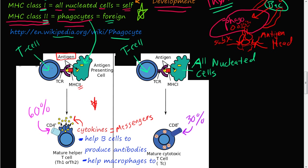So what's going to happen? This T-cell is going to change names — it's the same T-cell, but it will now be called a mature helper T-cell, or a CD4+ T-cell. Why? Because there is a molecule called CD4+ that sticks out and binds to the major histocompatibility complex right here. Once this T-cell is presented with an antigen from a phagocyte through the MHC class II molecule, it changes names and performs the function of a helper T-cell.